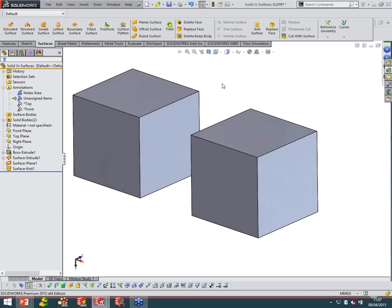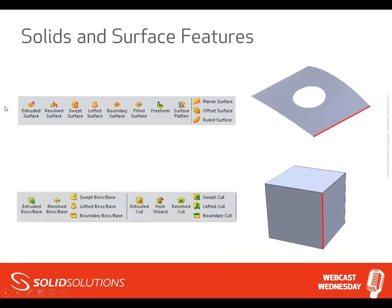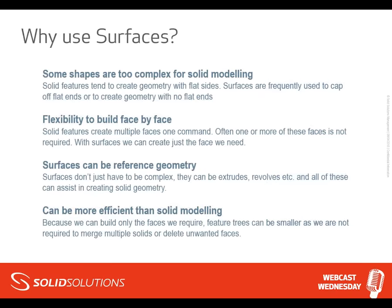What you'll probably notice is that surface modeling can take a little bit longer to get to the final result. Instead of just creating a cube, I have to create a couple of features and then knit them together. You might ask why we bother with surface modeling when we can create solid geometry a lot quicker and more efficiently. Well, that's not always the case — there are a few reasons we might want to create surface geometry, and a lot of it comes down to complexity of the model.